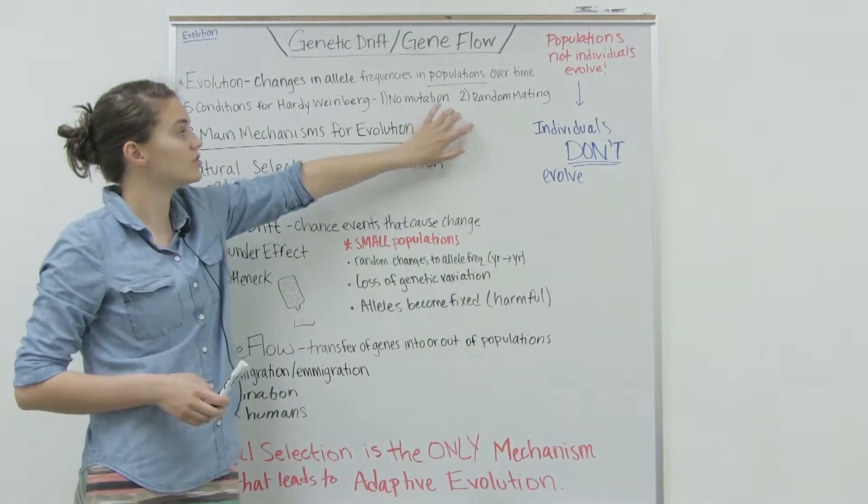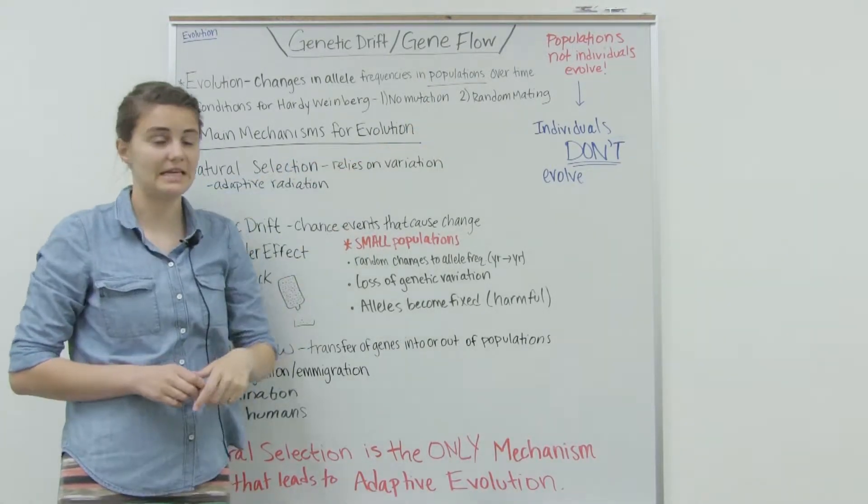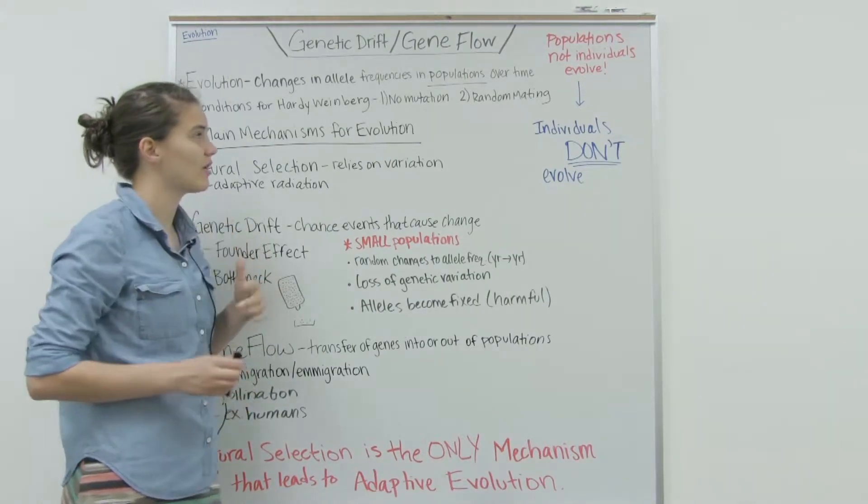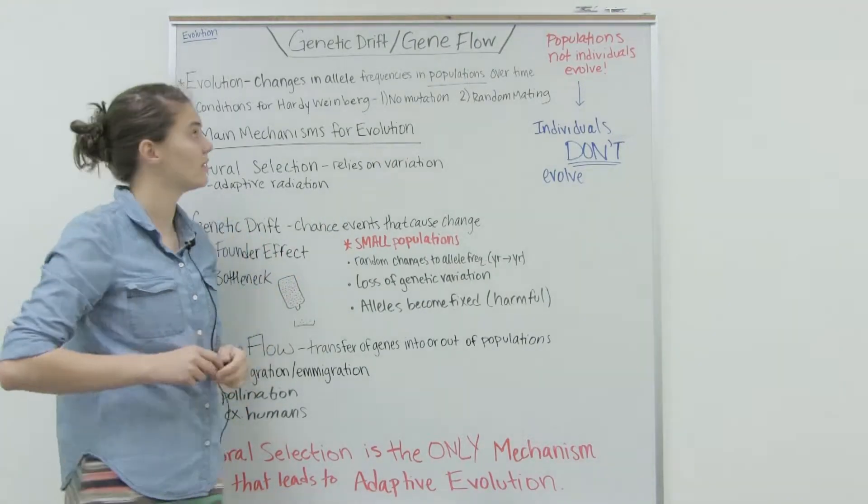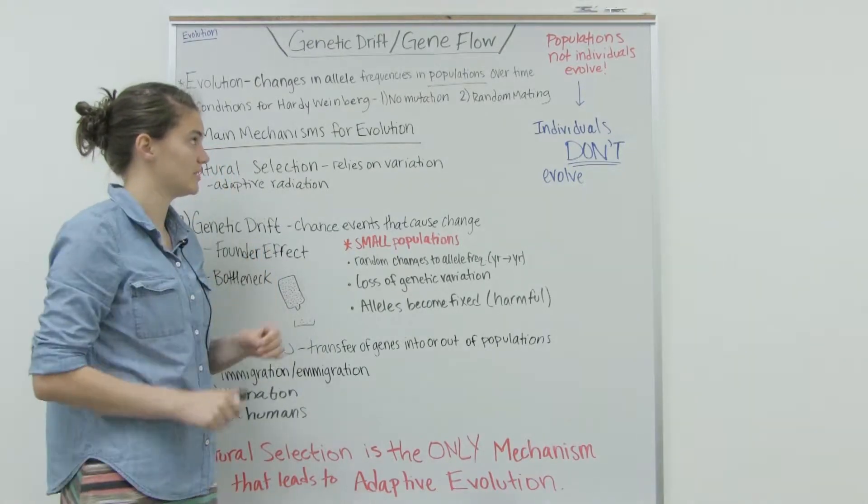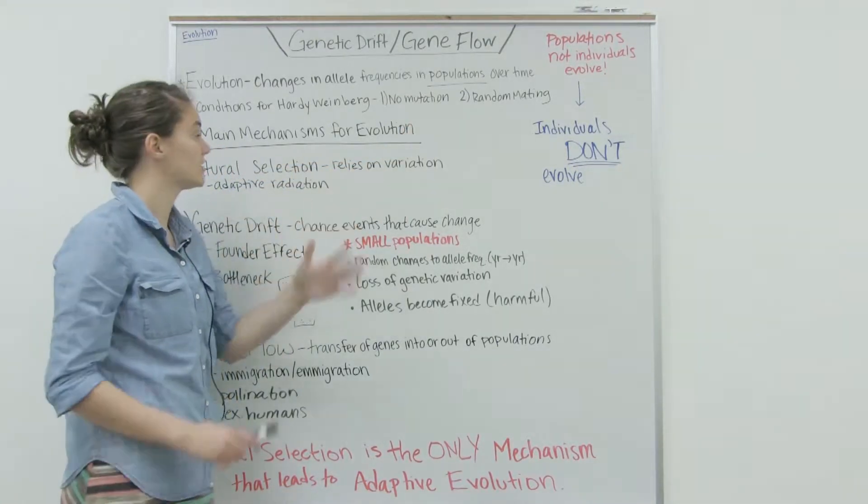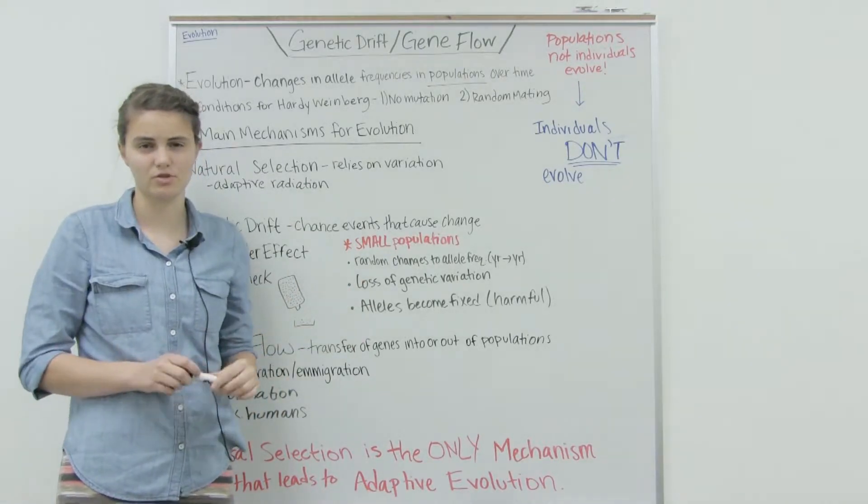The first two were no mutation and random mating. While they are important, they won't actually cause major changes in allele frequencies. Mutations are really rare, and populations are so big that it's not a major mechanism for evolution.